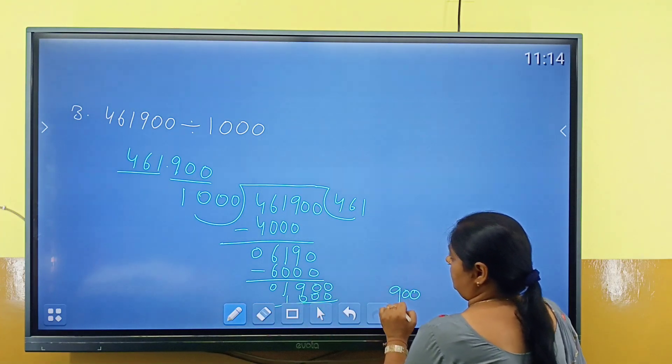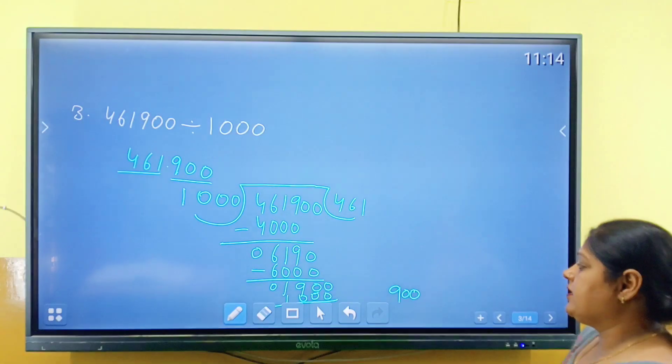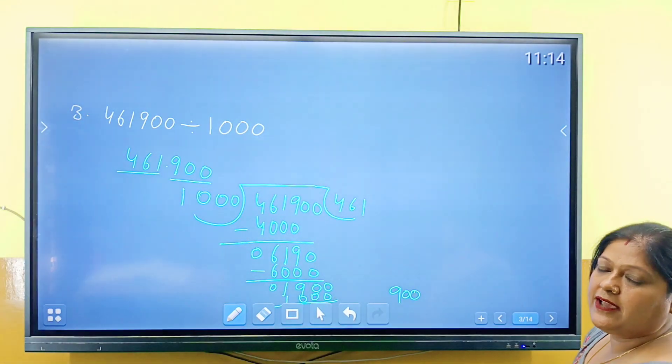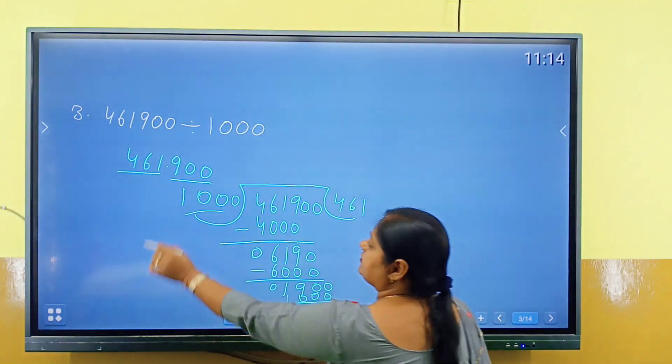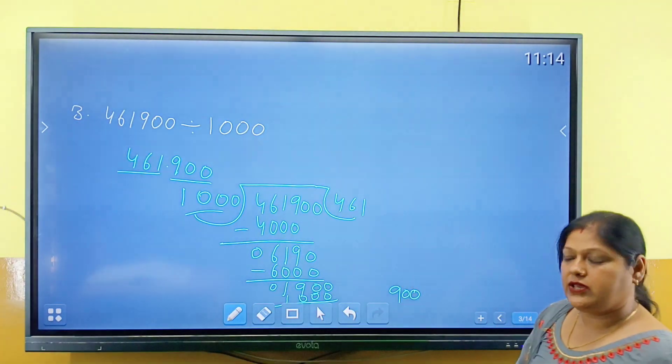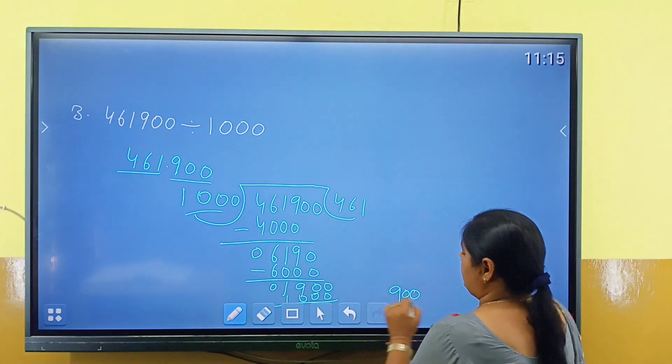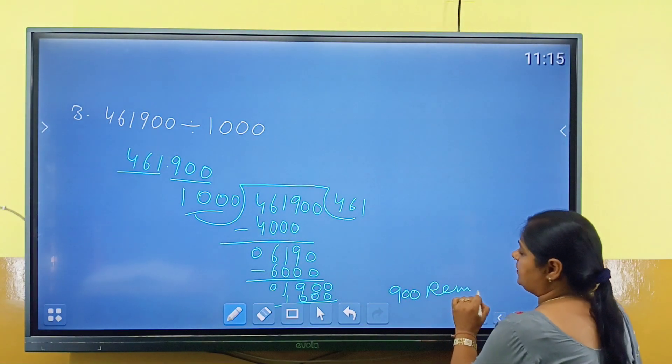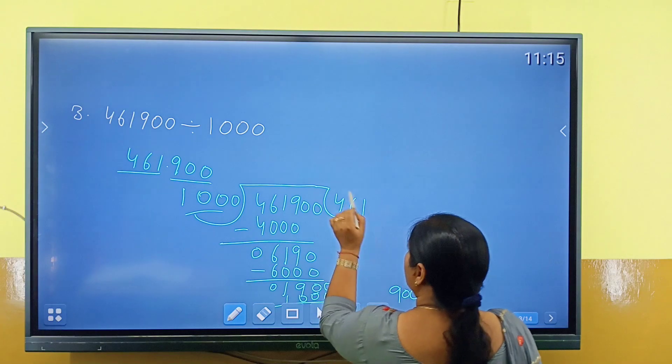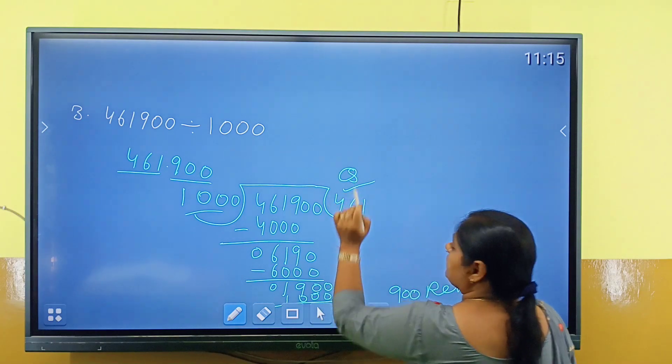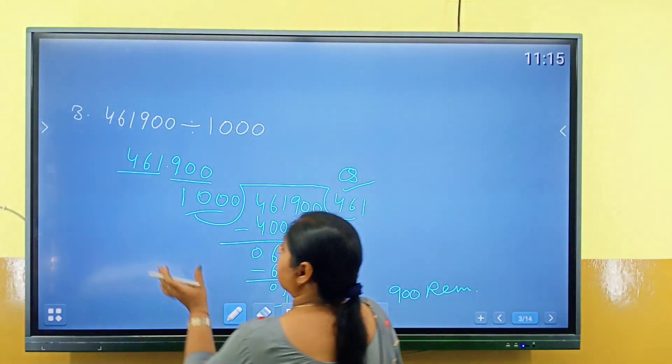Zero, zero, nine. 900, what did we get? Remainder, because 900 is smaller than 1000, we can't divide. 900, what did we get? Remainder, clear. And this is what we get, quotient, clear.